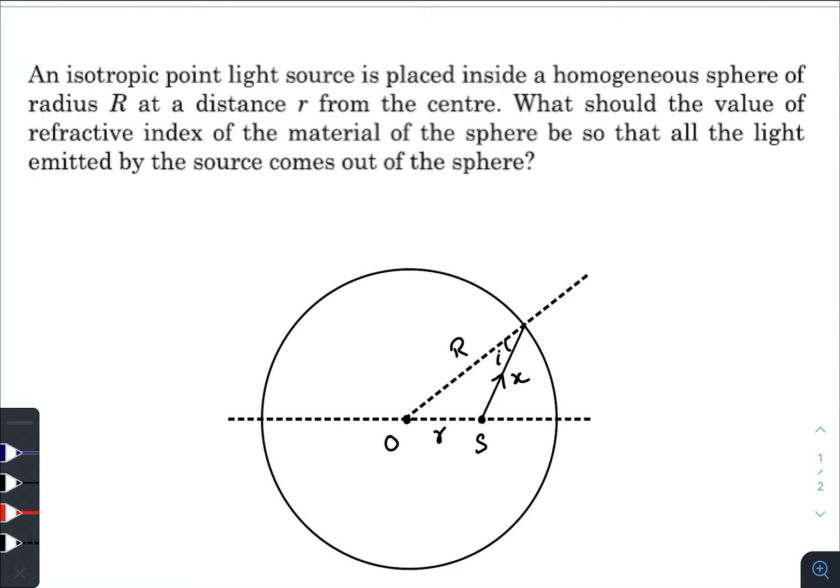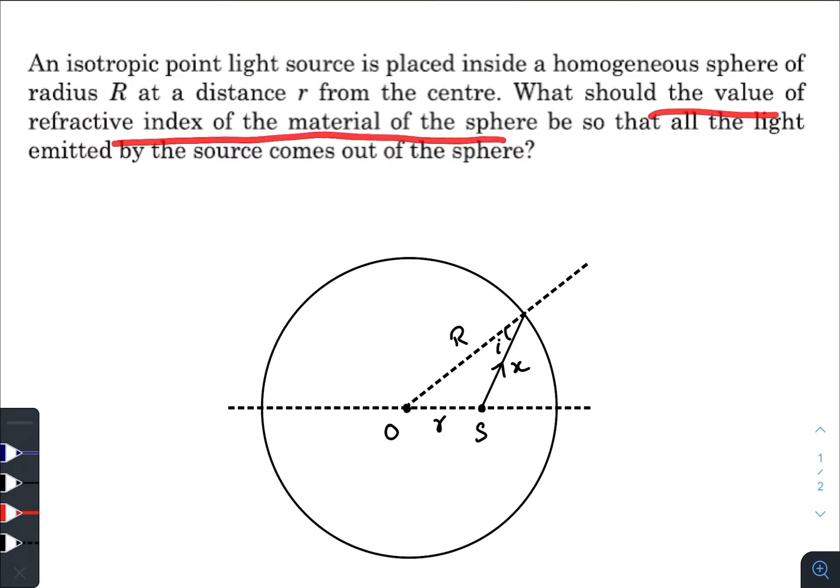Hey, what is up everyone. I hope all of you are doing great. In today's question, we have an isotropic point light source placed inside a homogeneous sphere of radius R at a distance r from the center. What should the value of refractive index of the material of the sphere be so that all the light emitted by the source comes out of the sphere?